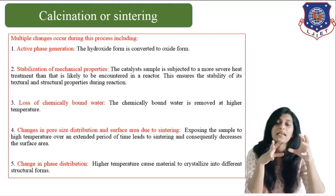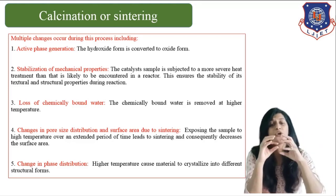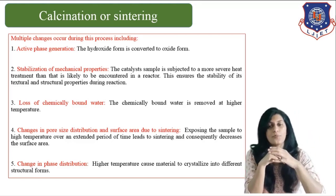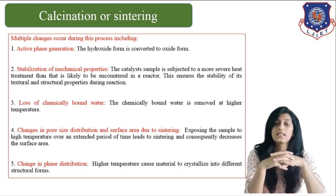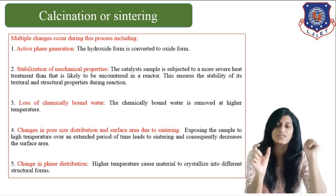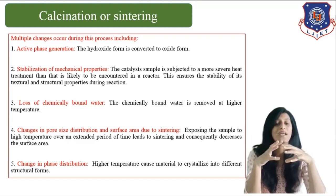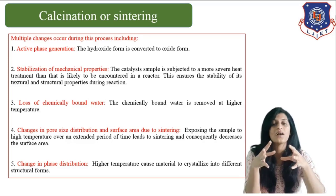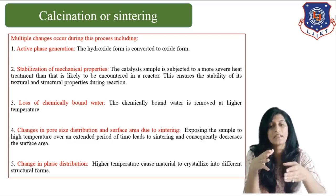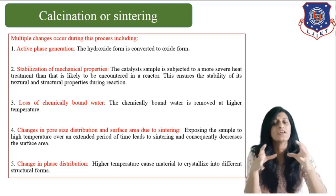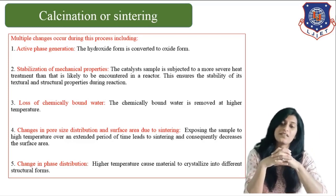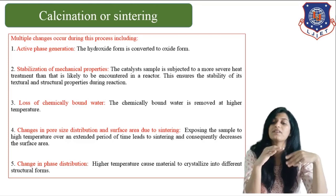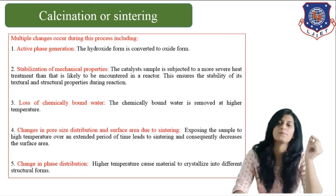The third change is loss of chemically bonded water — if any water molecules are present inside the catalyst, they can be removed. The fourth outcome of calcination is change in pore size distribution and surface area due to sintering. When samples are exposed to high temperature over an extended period of time, there is a consequent decrease in the surface area. The fifth and last important change is change in phase distribution — higher temperatures cause the material to crystallize into different structural forms. These are the important outcomes from calcination.